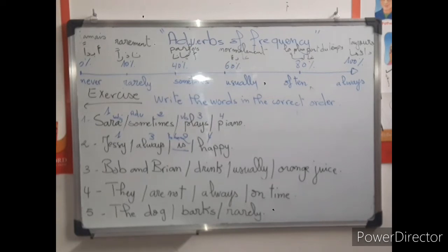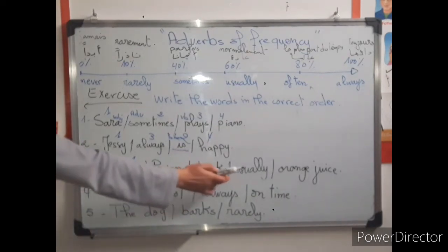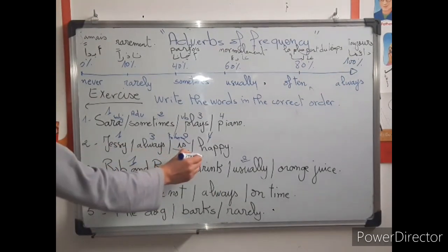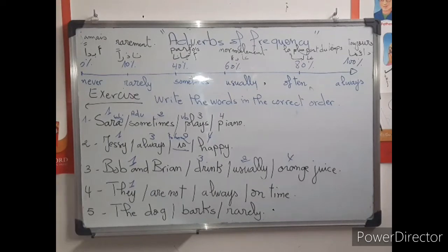Number three: Bob and Brian — subject, number one. The verb is drink — not verb to be — so it will be number three, after the adverb. The adverb is usually — number two. The verb drink is number three, and orange juice is number four. Number four is a negative sentence: They is the subject — number one. The verb are not is verb to be — number two. The adverb always is number three, and on time is number four.